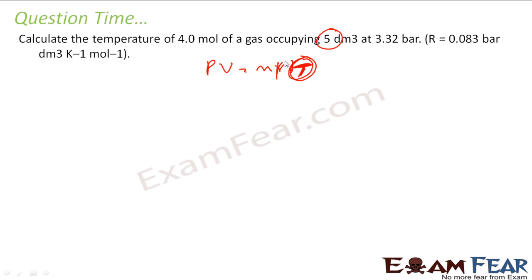It will come in Kelvin. Please note in this chemistry, the units are very important. So the temperature will be what? PV by nR. So if you see the R unit is in bar per dm cube per Kelvin per mole, that means now I will take pressure in bar. So pressure in bar was how much? 3.32 bar.